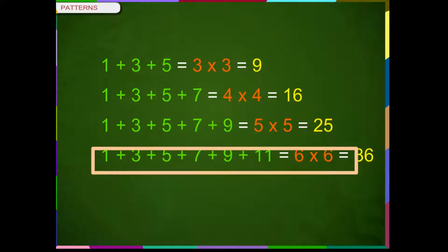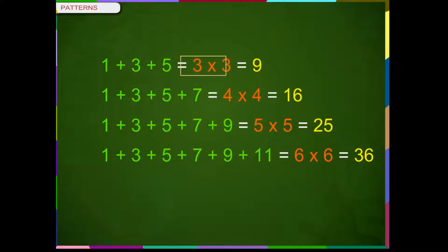1 plus 3 plus 5 plus 7 plus 9 plus 11 is equal to 36. The sum of 3 consecutive odd numbers is 3 into 3, which is 9. The sum of 4 consecutive odd numbers is 4 into 4, which is 16. The sum of 5 consecutive odd numbers is 5 into 5, which is 25. So, this pattern allows us to write the sum of any number of consecutive odd numbers starting from 1 without actual adding.